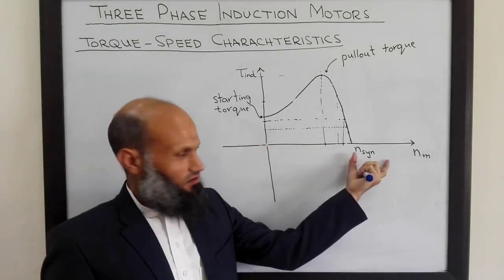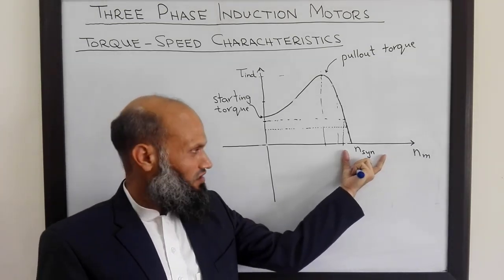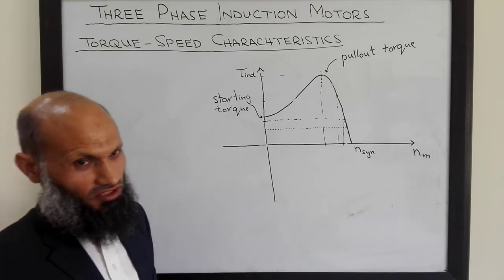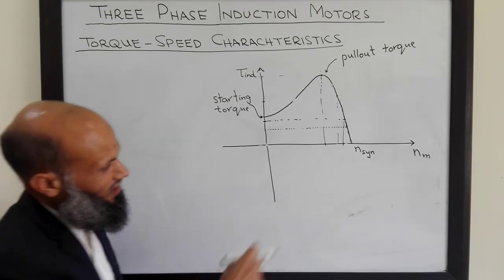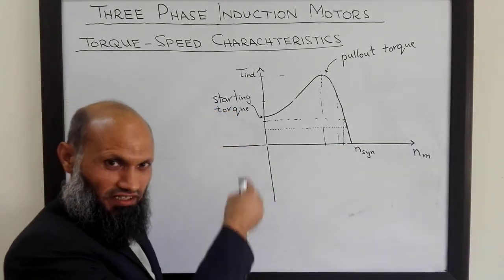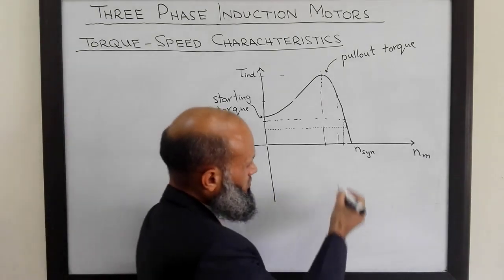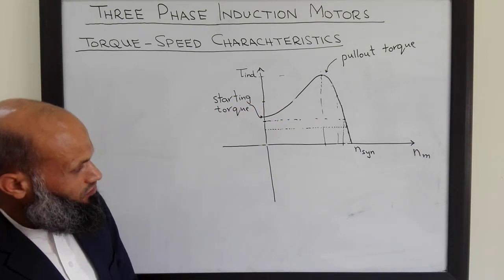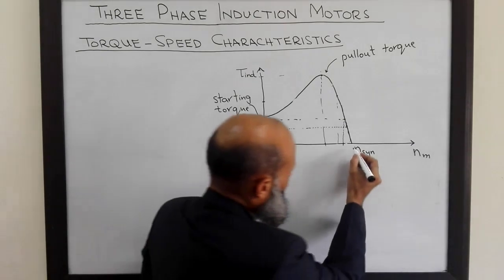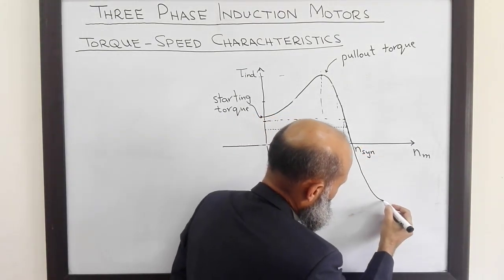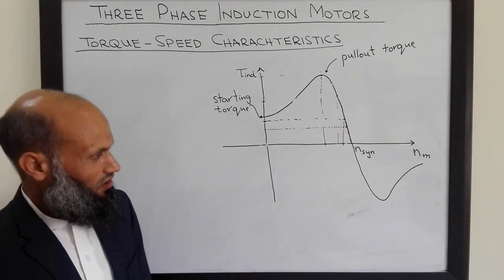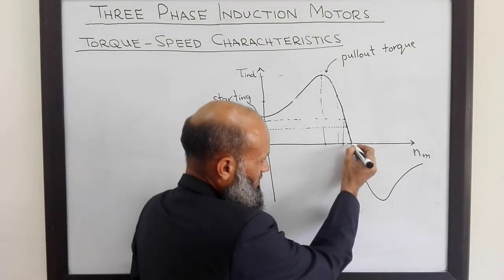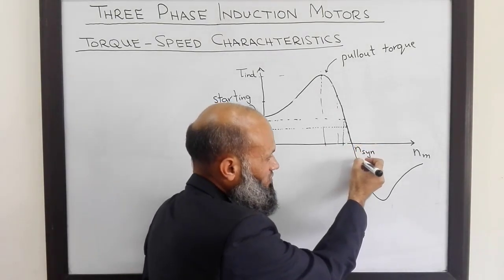The motor cannot run at synchronous speed, and it cannot run at a speed higher than synchronous speed under normal conditions. However, what will happen if you apply an external prime mover to the rotor of this motor and run it at a speed higher than synchronous speed? If you connect an external prime mover which rotates the rotor of this induction motor at a speed higher than synchronous speed, the direction of induced torque is reversed.